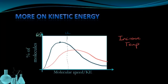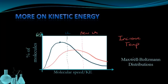This new average molecular speed, the new u, shows that there's an increase in average kinetic energy. These kinds of distribution curves are called Maxwell-Boltzmann distributions, or Maxwell-Boltzmann curves. These distribution graphs are helpful to consider when we talk about reaction rates later on.